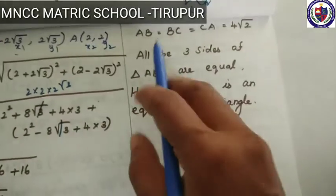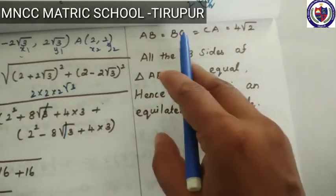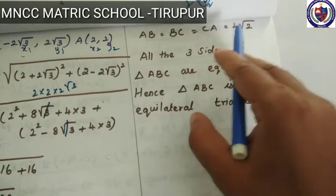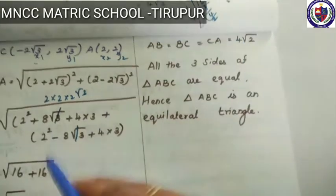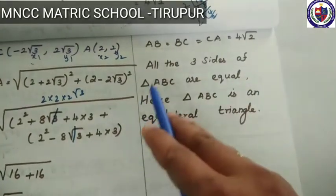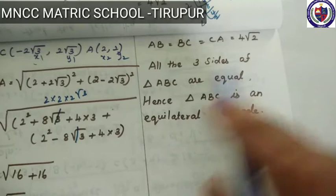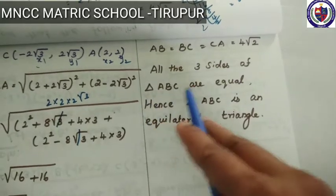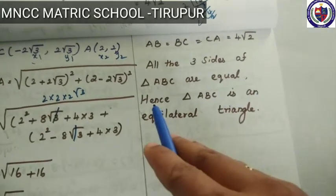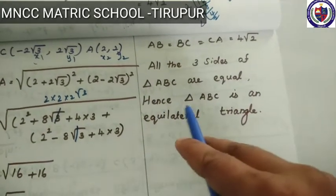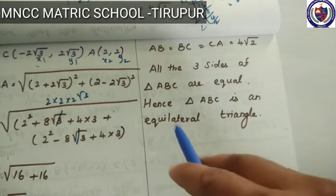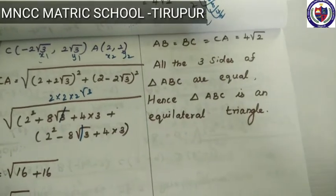Conclusion: AB = BC = CA = 4√2. All three sides of triangle ABC are equal. Hence triangle ABC is an equilateral triangle.